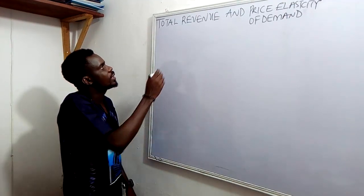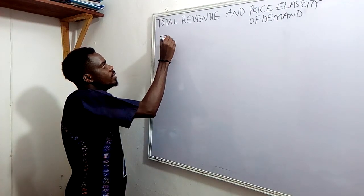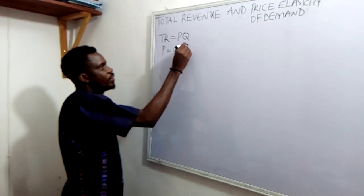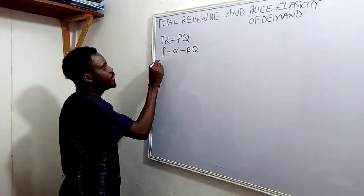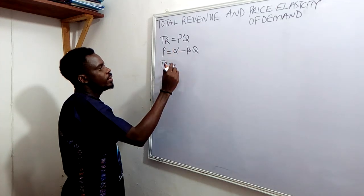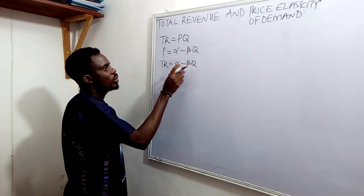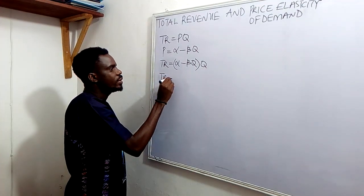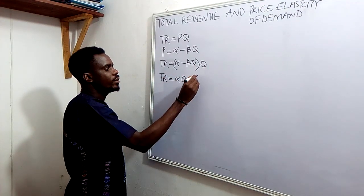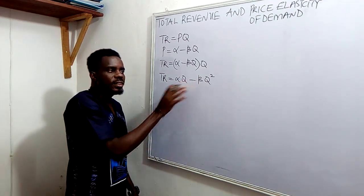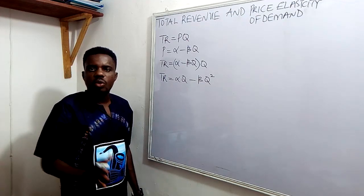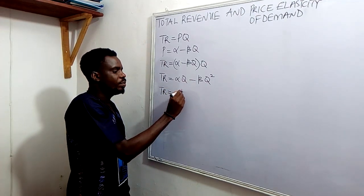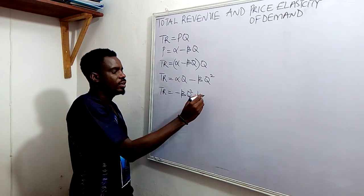In our previous class, we were able to establish that total revenue is price multiplied by quantity, and the equation for price was given as alpha minus beta Q. As such, our total revenue using this formula is (alpha minus beta Q), which is our price, multiplied by quantity. Then total revenue is alpha Q minus beta Q squared. This equation is a typical quadratic equation, and we can express our total revenue as minus beta Q squared plus alpha Q.